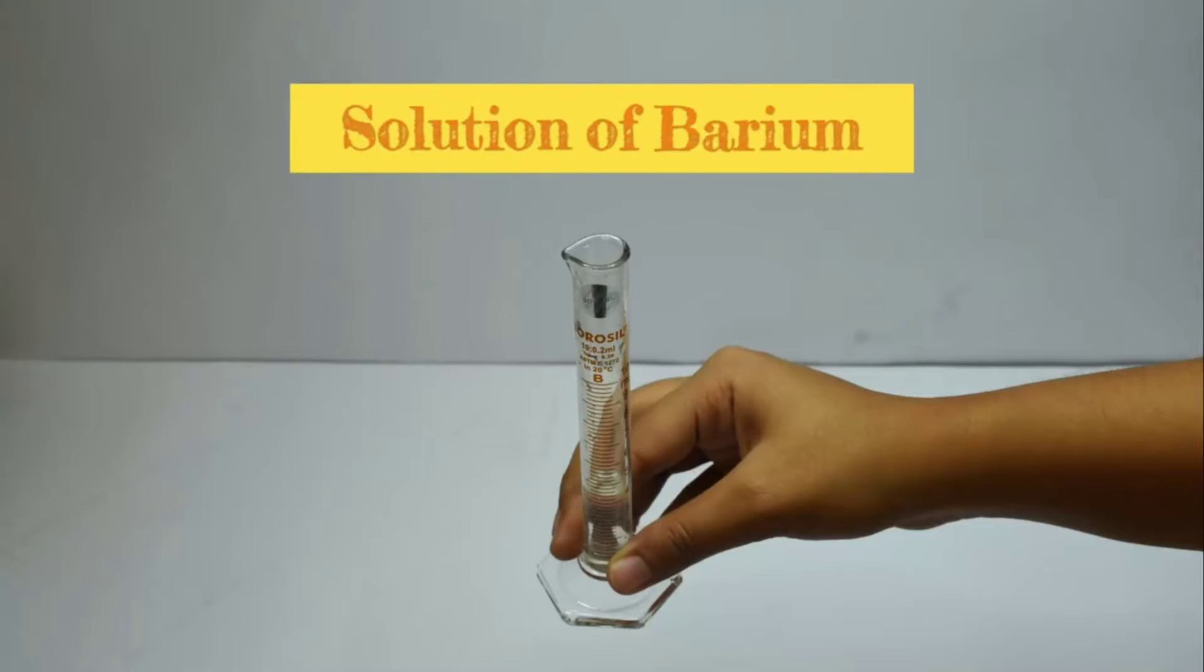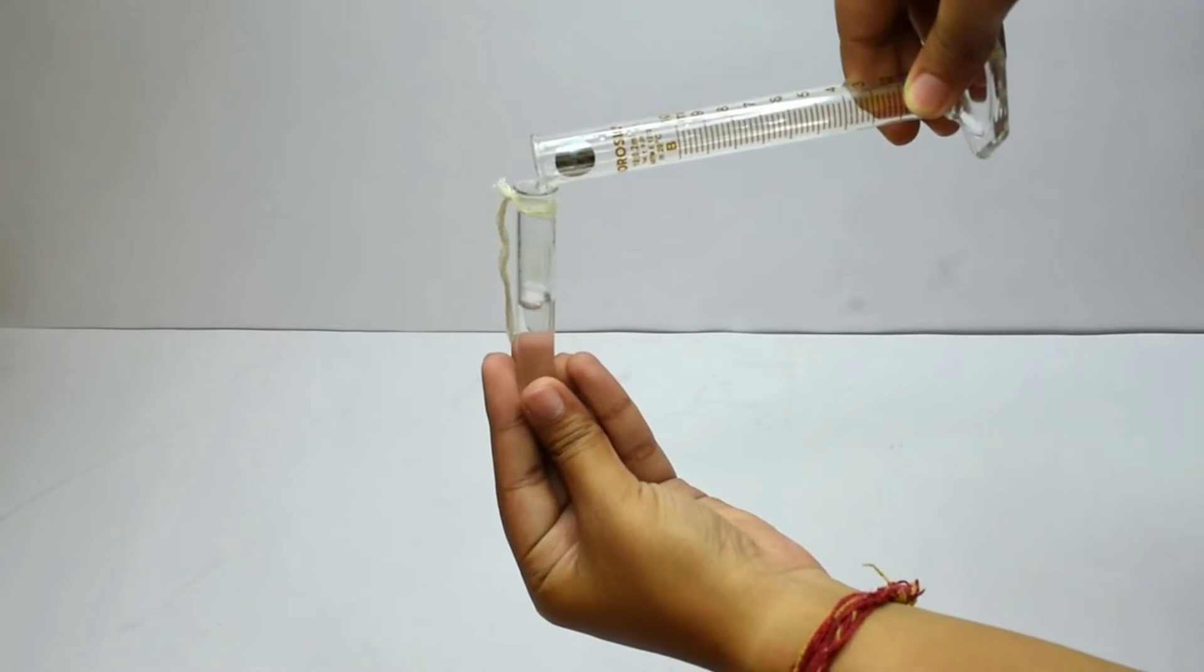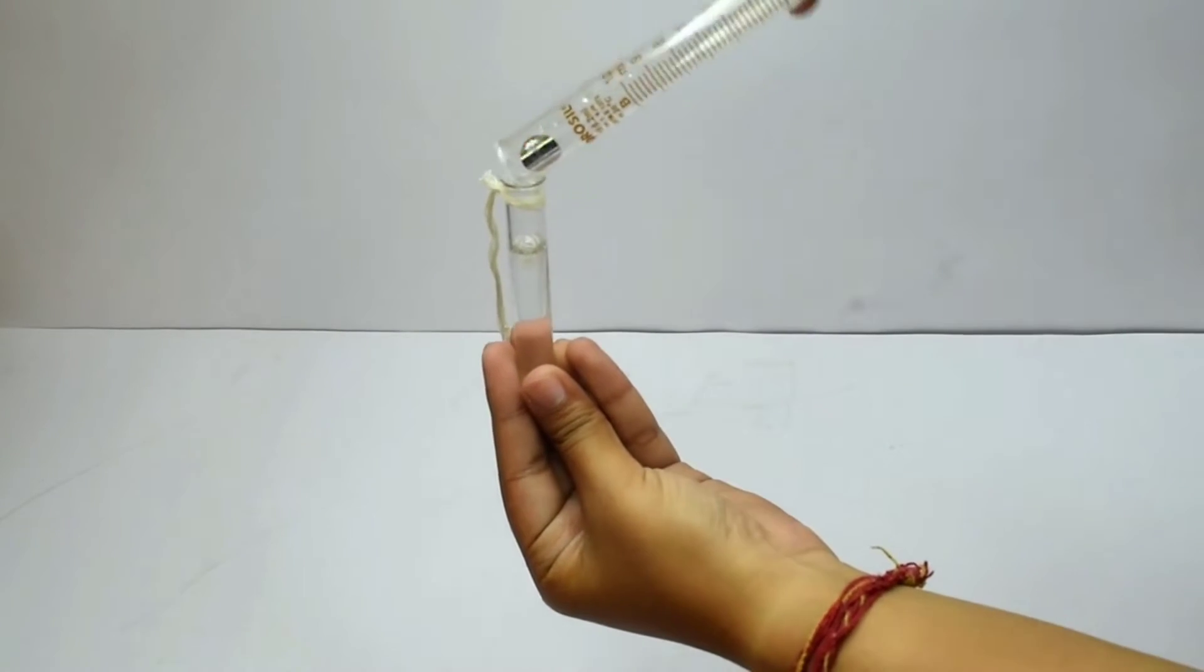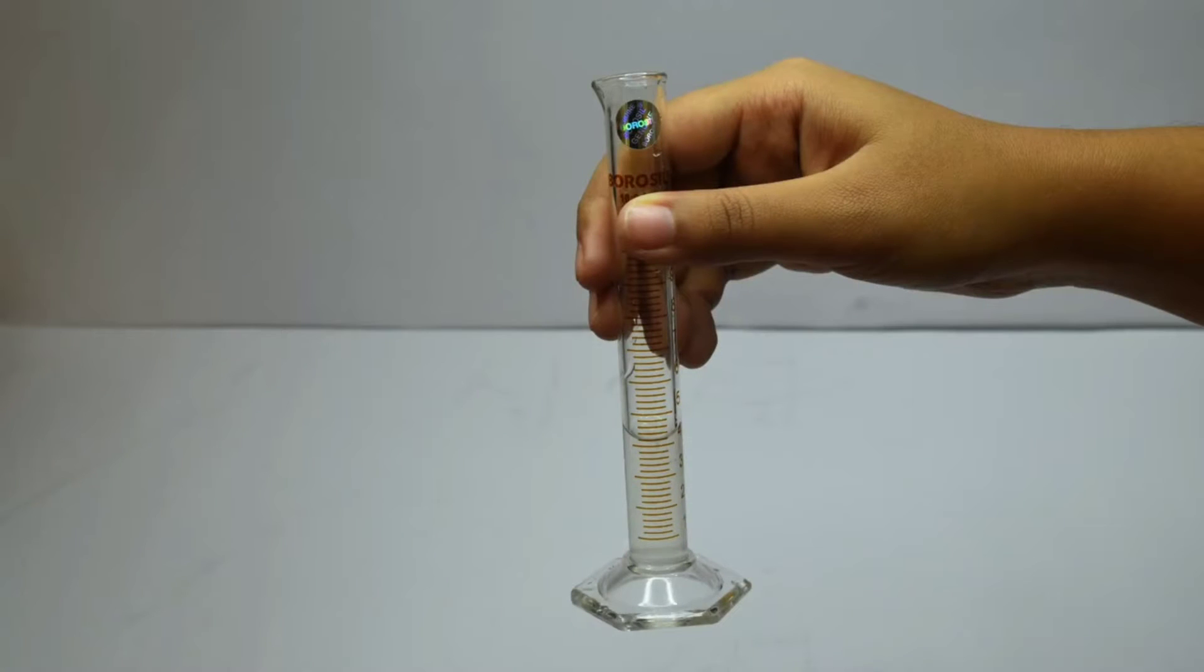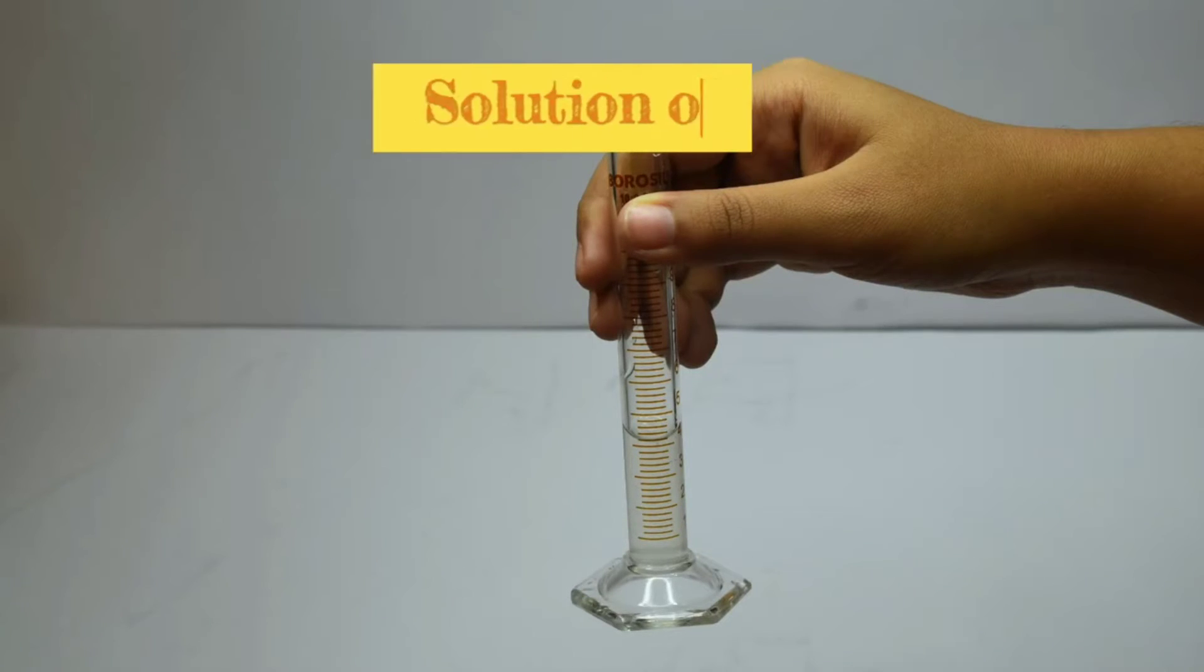First, we will make a solution of barium chloride and carefully transfer 4 milliliters of this solution into the ignition tube. Next, we will make a solution of sodium sulfate and take again 4 milliliters of it in a measuring cylinder.